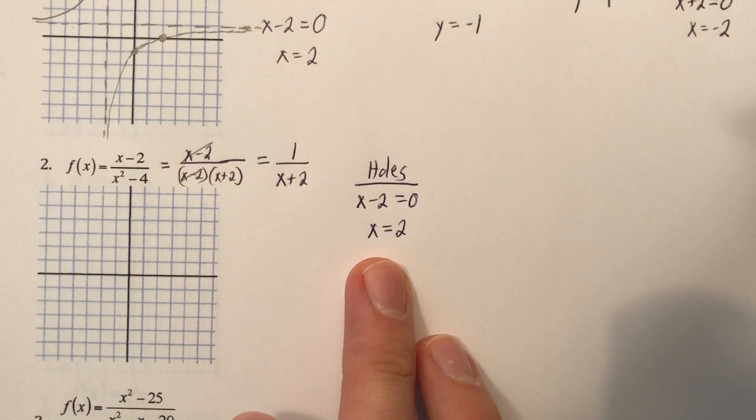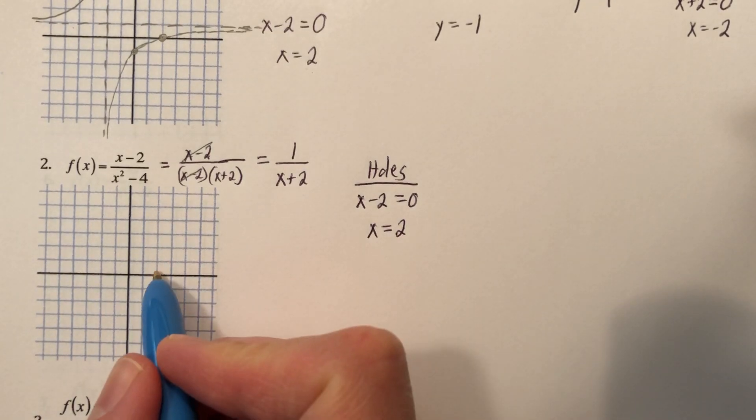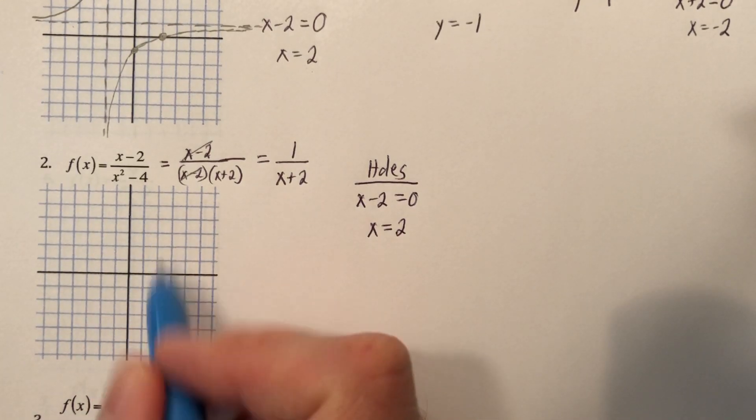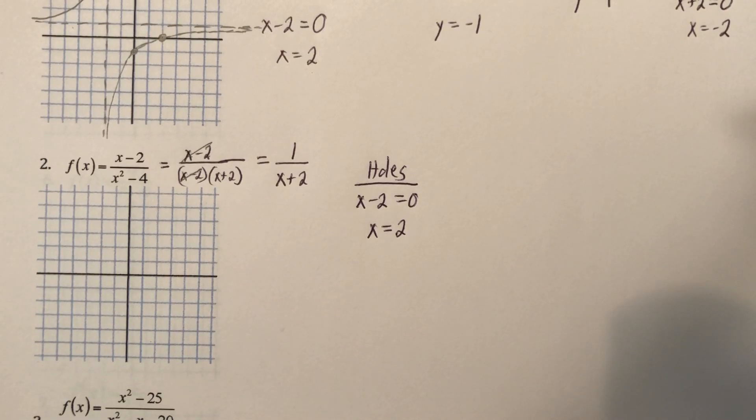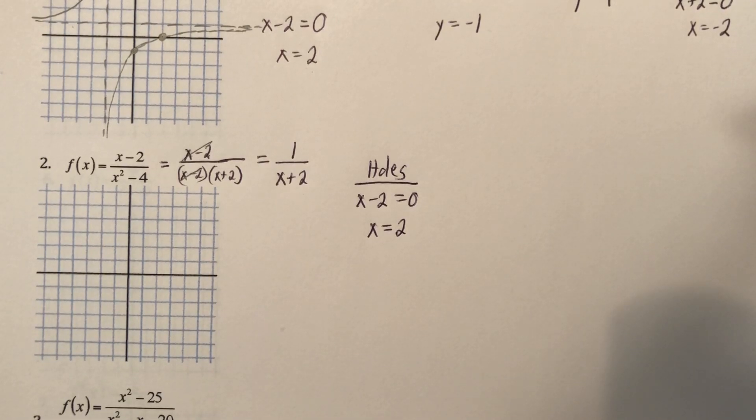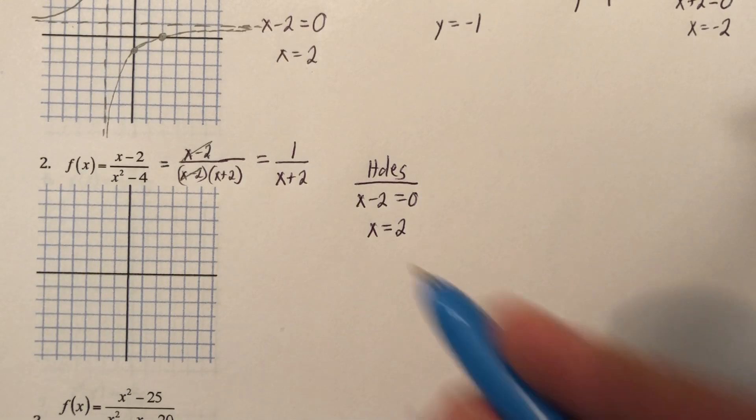All right, so there's a hole in my graph at x equals 2. Now, that means that somewhere along this vertical line, there's a hole. I don't know where that hole is, but I'm about to find out where it is. I'm going to tell you it's at 1 fourth. 2 comma 1 fourth, and here's how I know.